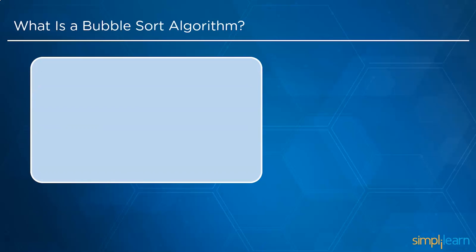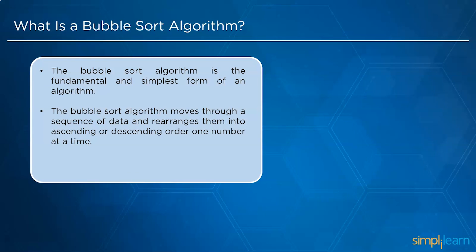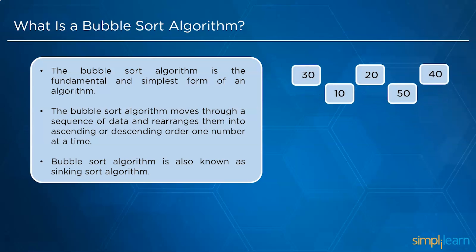The bubble sort algorithm is one of the fundamental and simplest forms of algorithm used to sort a collection of elements. The collection can be either a set of numbers or characters. The control iterates through a sequence of numeric or character type elements and rearranges them into ascending or descending order, one element at a time. Bubble sort is also known as the sinking algorithm.